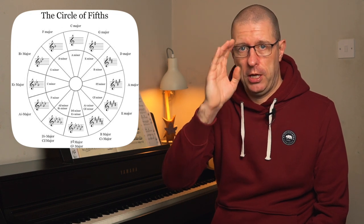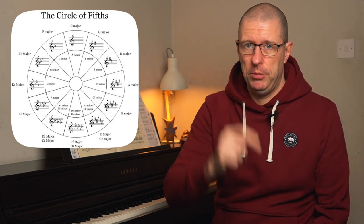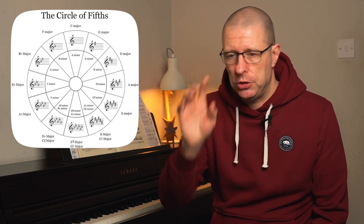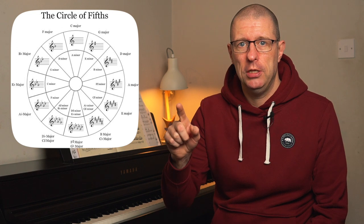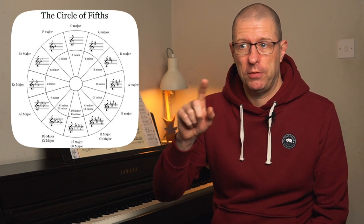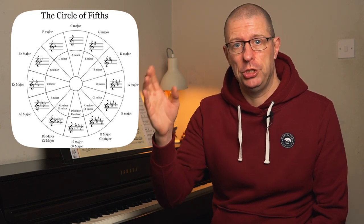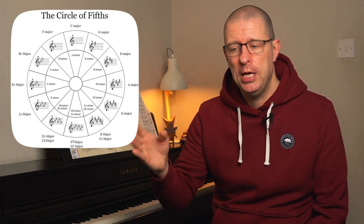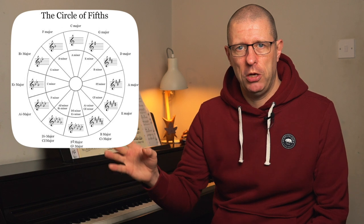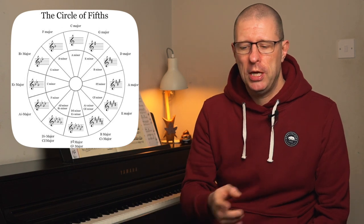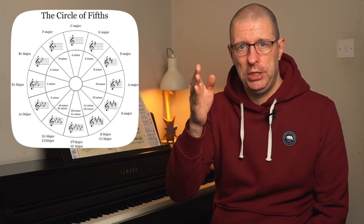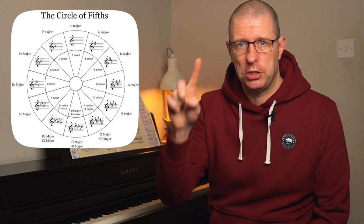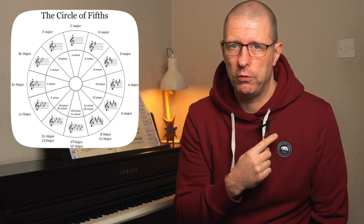For instance, if you start at the top you start with C major. If you go clockwise, you go to G, which is an upper fifth, then an upper fifth from G is D, then A, and it works its way all the way around. By the time it gets back to C again, you've covered all 12 keys.